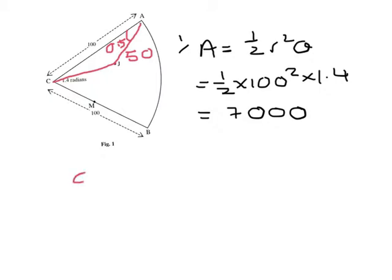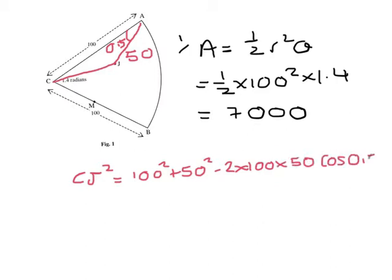So I'm going to use the cosine rule. CJ squared has to equal 100 squared plus 50 squared minus 2 times 100 times 50 times the cosine of 0.5.